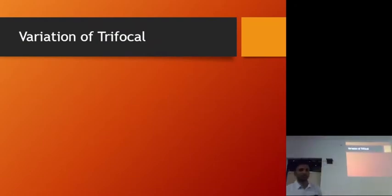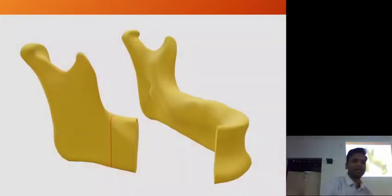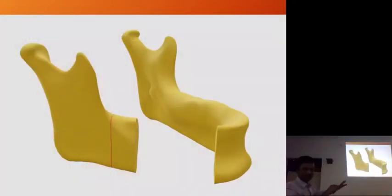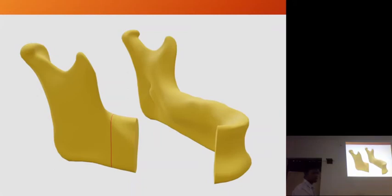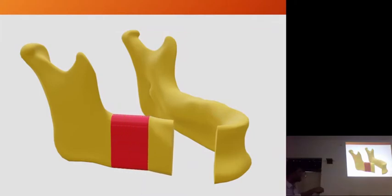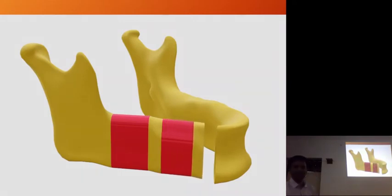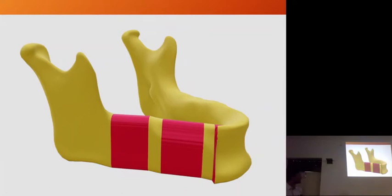Then we have different variations of trifocal. Imagine there's a huge defect that we're not able to manage using a single transport disc. In trifocal, we create two transport discs on one end. We move one transport disc anteriorly, wait a few days for healing, then divide this transport disc into two parts — one gets fixed and the other moves anteriorly. Then we graft that side. This is trifocal because we have three sites where new bone formation is occurring.